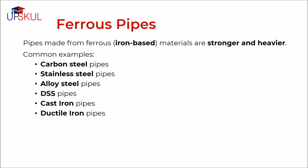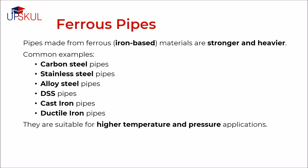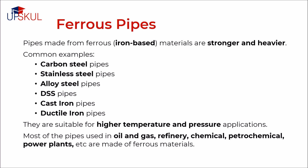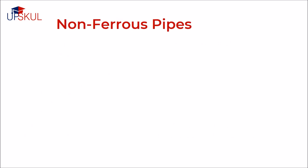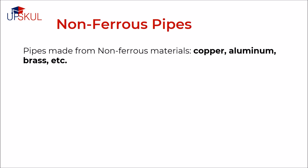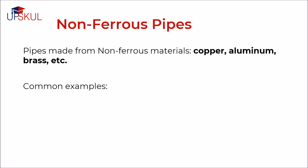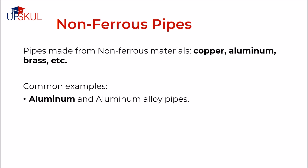This category of pipes is suitable for higher temperature and pressure applications. Most of the pipes used in oil and gas, refinery, chemical, petrochemical, power plant, etc. are made of ferrous materials. The types of pipes made from non-ferrous materials are those where iron is not the main constituent element. They are usually made up of copper, aluminium, nickel, titanium or zirconium.